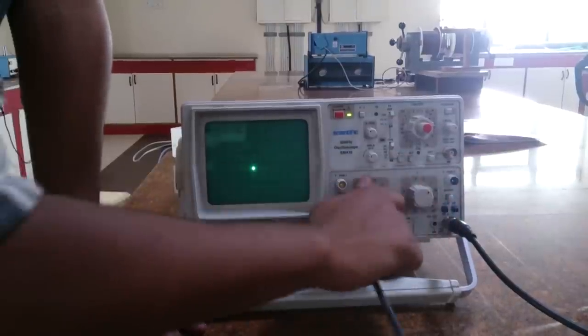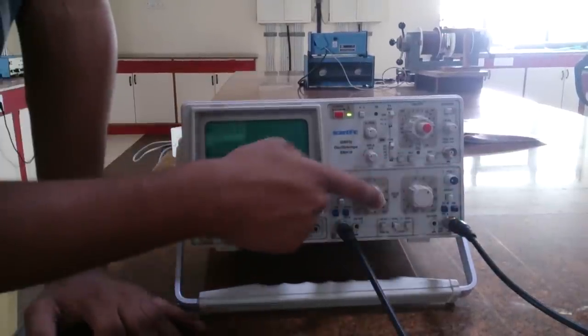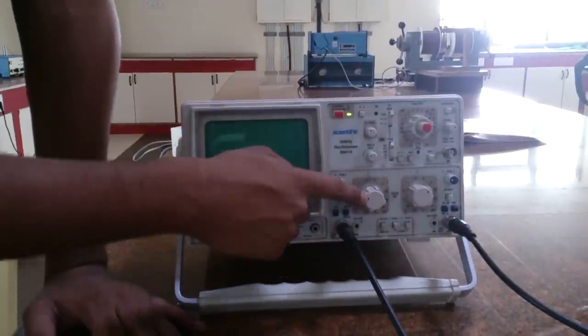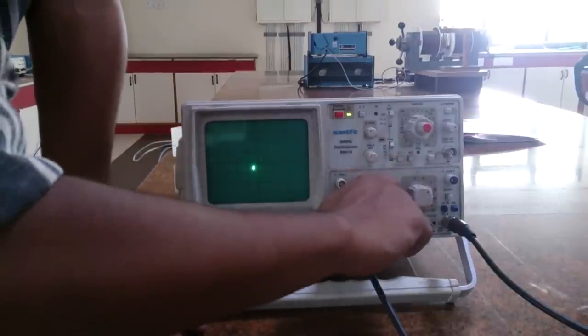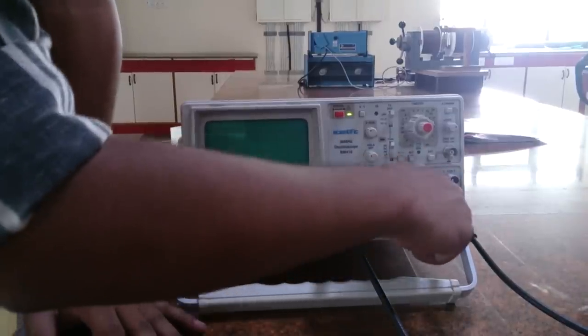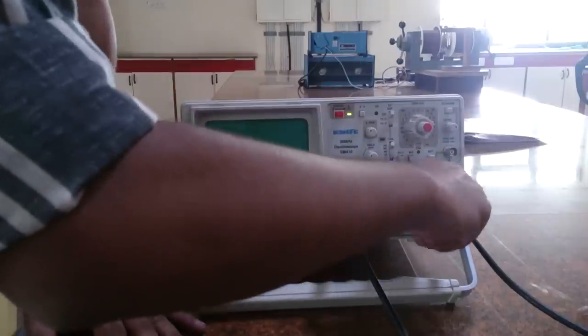You see these tuners over here, these knobs? These two, what they do, they increase and decrease the horizontal voltage applying through this end. This is just increasing the exit voltage, increasing and decreasing with these buttons.